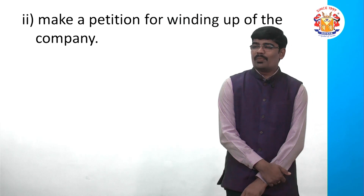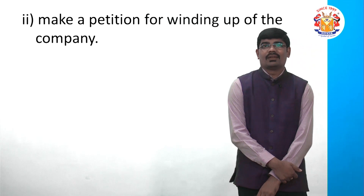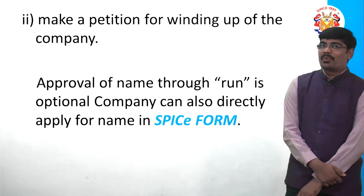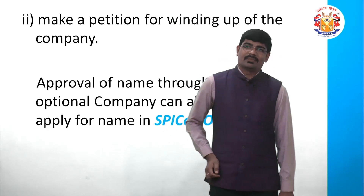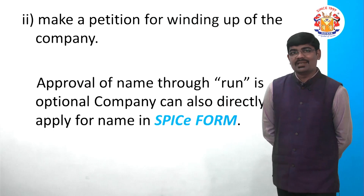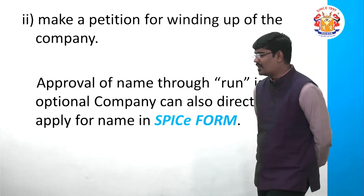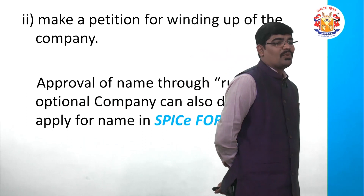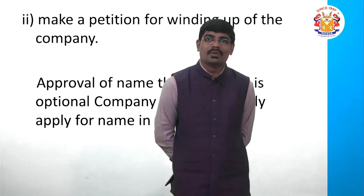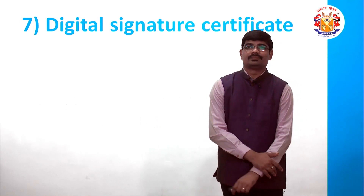If the company has been formed and is operating and cannot simply be closed, its compulsory winding up may be ordered. For name approval you have two options: either file Form RUN separately at this stage, or if you don't want to do that, when you fill the main SPICE form, you can directly proceed with name approval in the main form itself.